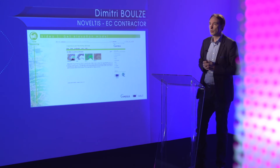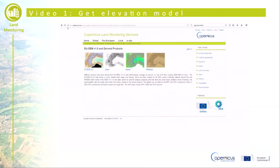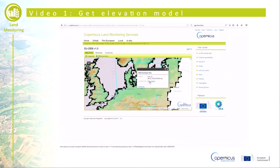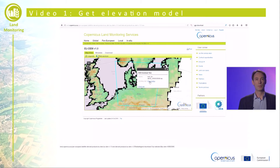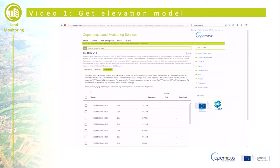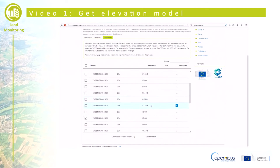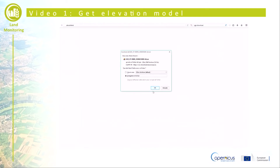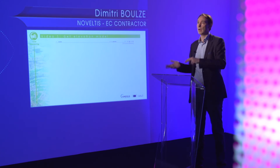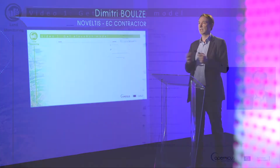This first video shows you how to get the digital elevation model data from the Copernicus Land Monitoring Service. First, we have to select the area of interest — in this case, it's going to be north of Europe around Denmark. Then we will download the data and decompress the file. We go to the Copernicus Land Monitoring Service website, select the pan-European reference data, and choose EU DEM version 1.0. Then we select the specific tile of interest and download the dataset. If you're not registered yet, you will have to register; otherwise, you just log in on the EEA portal.